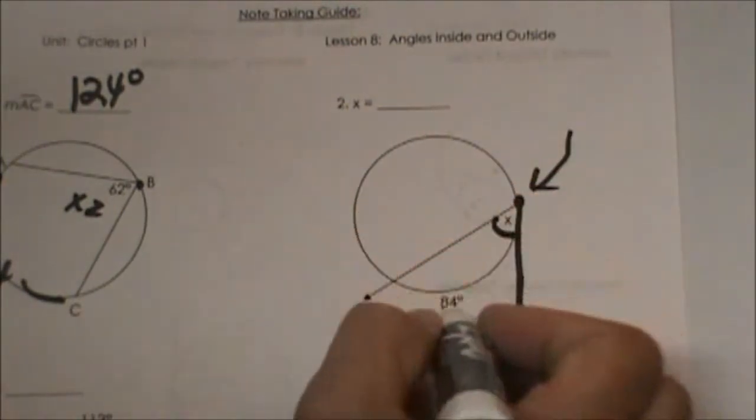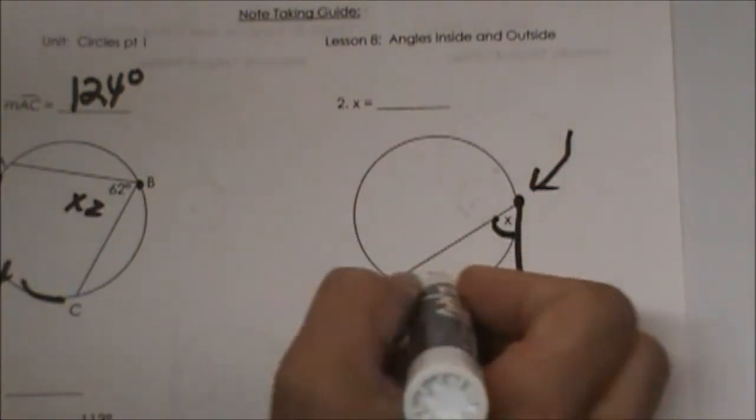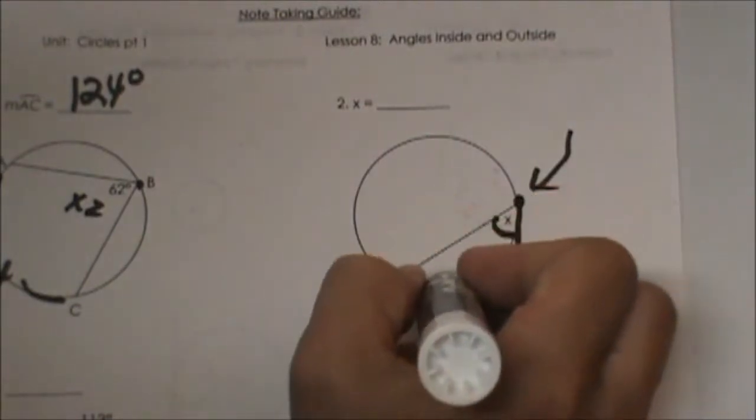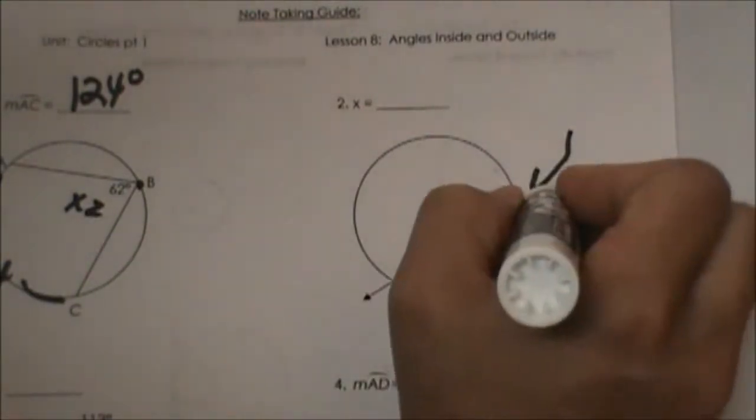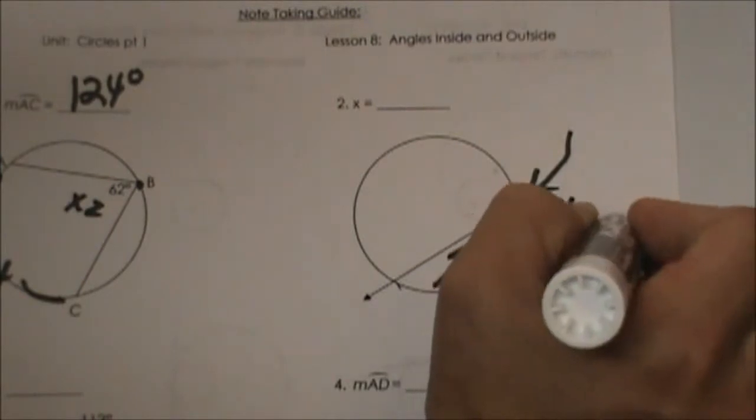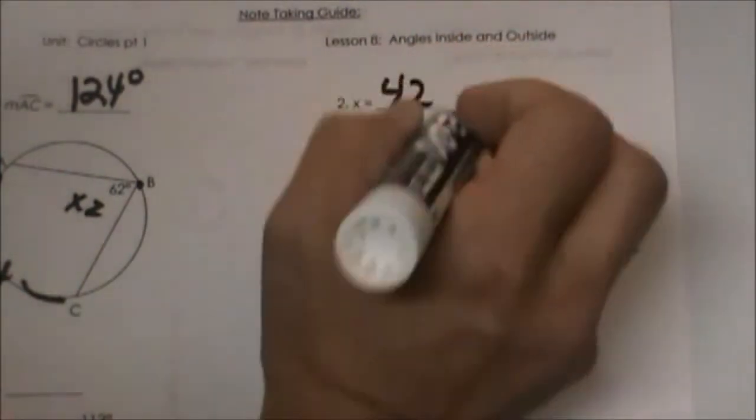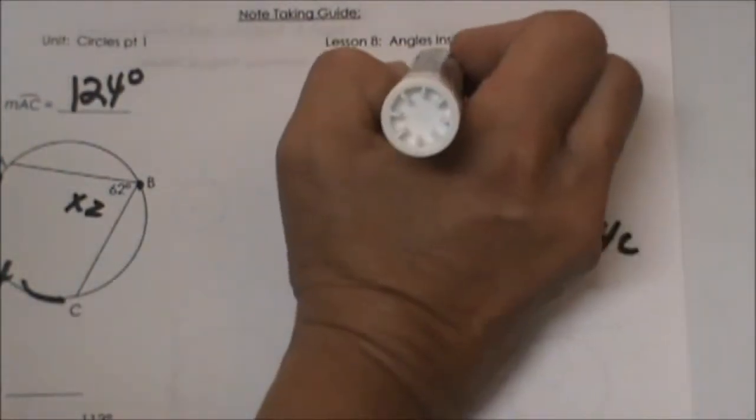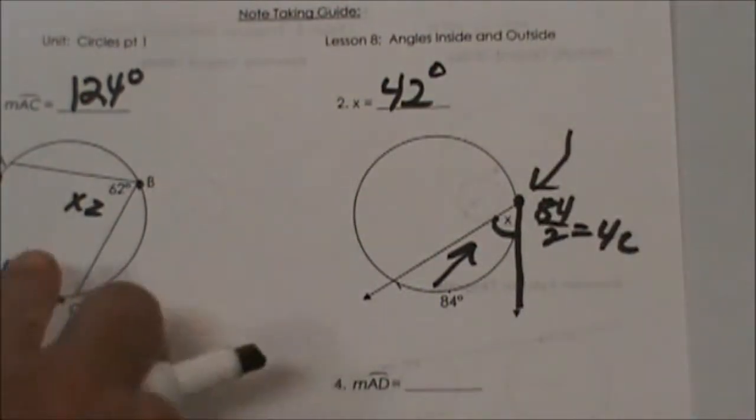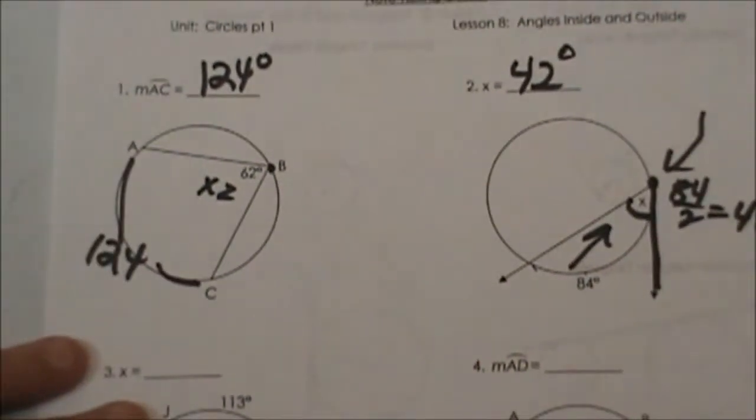Here is the angle. The arc is 84. This time I am going backwards so I have to make it smaller. I am going to take 84 and divide by 2 and that is 42. The angle is 42 degrees. Those are two inscribed angles.